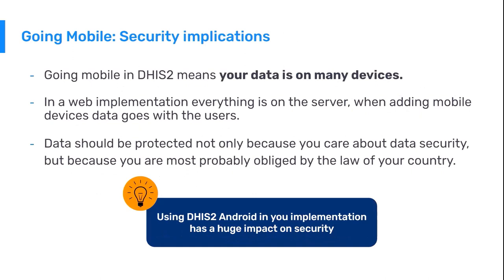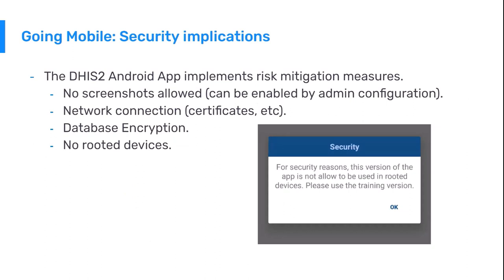Using mobile devices implies that the data is no longer only in one place. Compared to the web, where everything remains on the same server, mobile implementations allow the user to have the data in multiple devices. Data protection must be a priority, not only because you care, but because you are most probably obliged by the laws of your country. The app implements risk mitigation measures following mobile development security standards, such as screenshots only allowed if the admin enables it, secure network connectivity, database encryption, and if your device is rooted, the production app won't work and you'll need to use the training version.